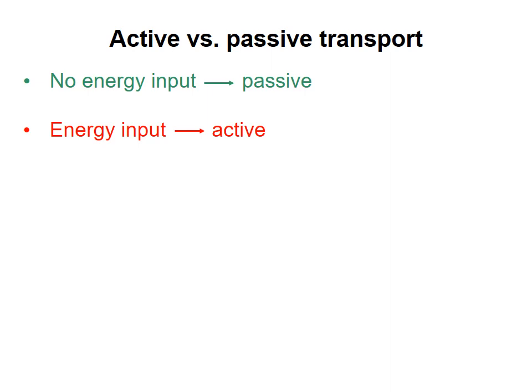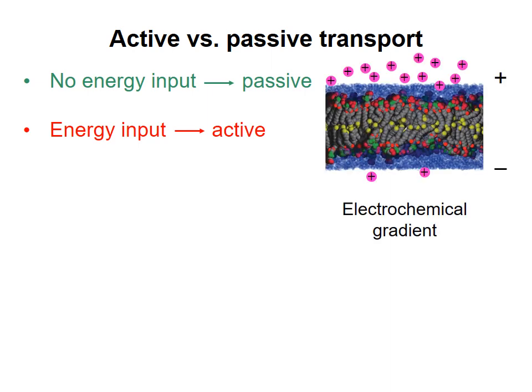Energy for transport can come from a molecule like ATP, as we'll discuss in a later topic, or it could come from an electrochemical gradient across the membrane. Such gradients occur when charged particles exist at a higher concentration on one side of the membrane than on the other. There are often two parts to the gradient: an electrical part and a chemical or concentration part.